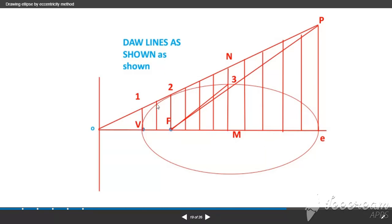And join these lines, give the names 1, 1 dash, 2, 2 dash, 3, 3 dash, 4, 4 dash, up to 12, 12 dash.